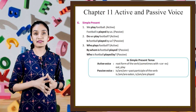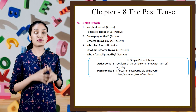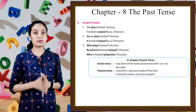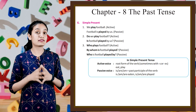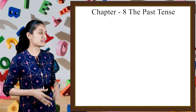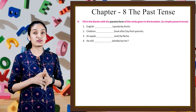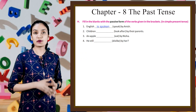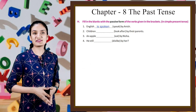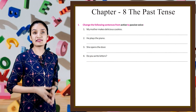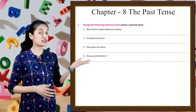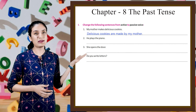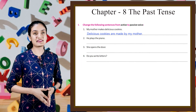In simple present tense, active voice uses the root form of the verb, sometimes with 's' or 'es' — eat, play. Passive voice uses is/are/am plus past participle of the verb — is/am/are eaten, is/am/are played. Now, fill in the blanks with the passive form of the verb given in brackets in simple present tense. First example: 'English is spoken by Anish.' Do the rest by yourself. Also, change the following sentences from active to passive: 'My mother makes delicious cookies' becomes 'Delicious cookies are made by my mother.' Change all sentences by yourself.